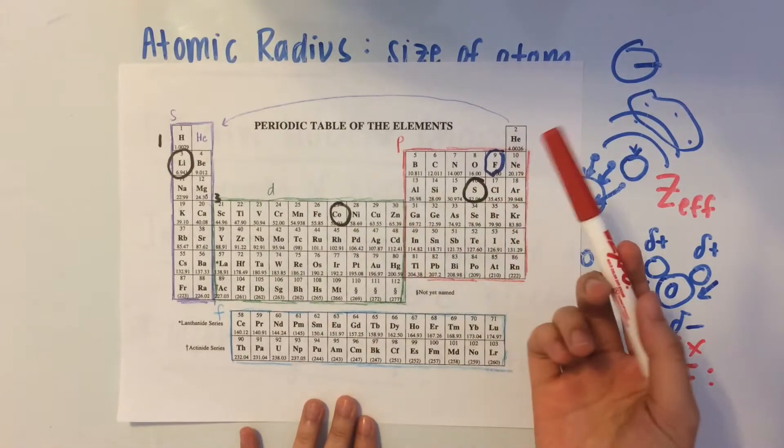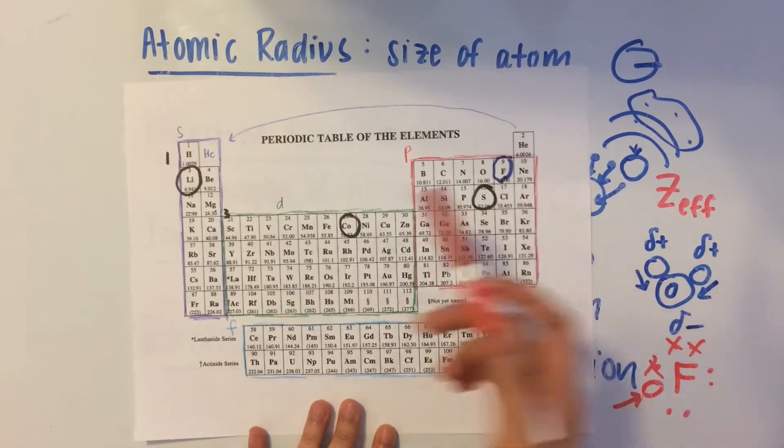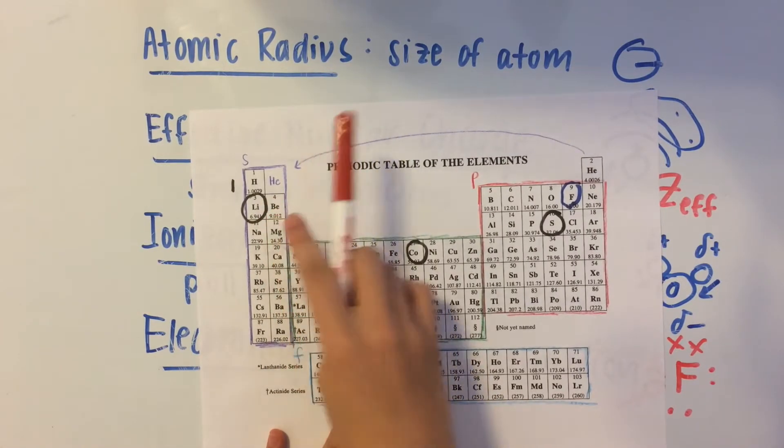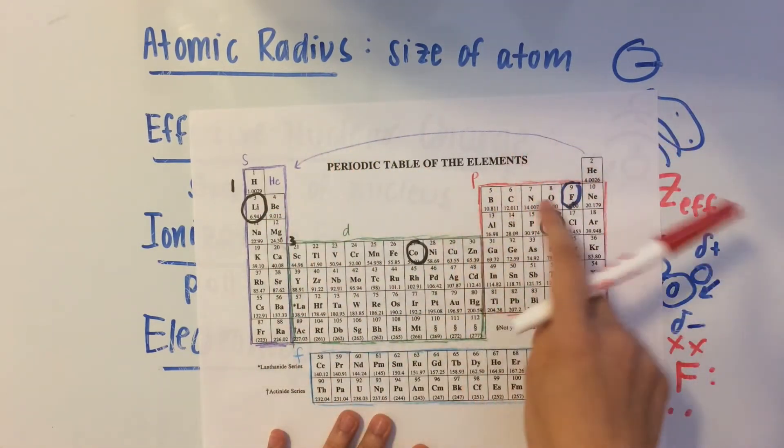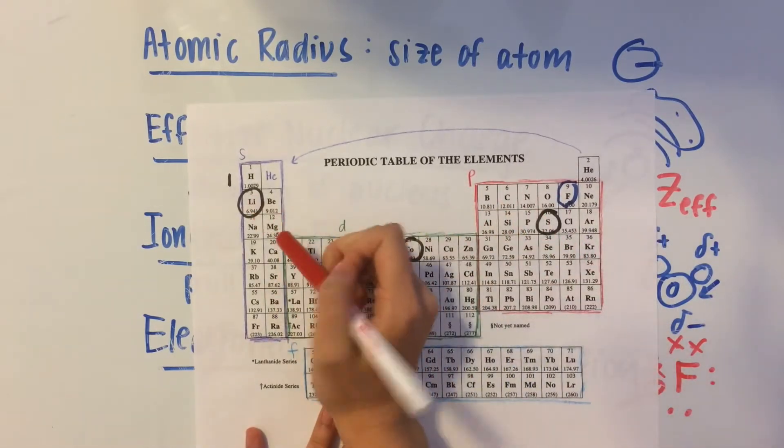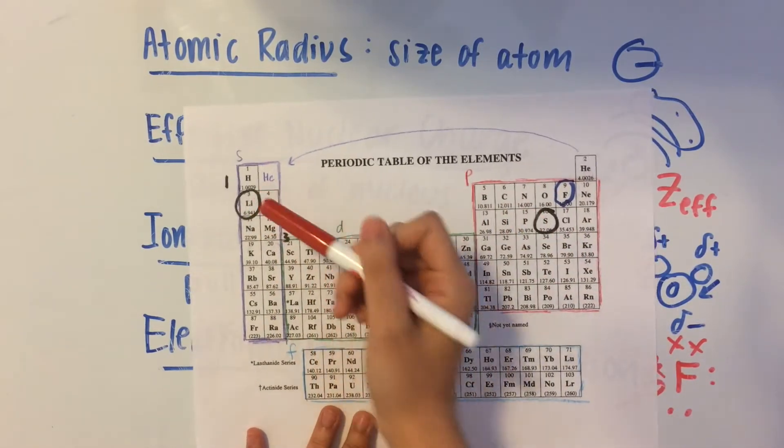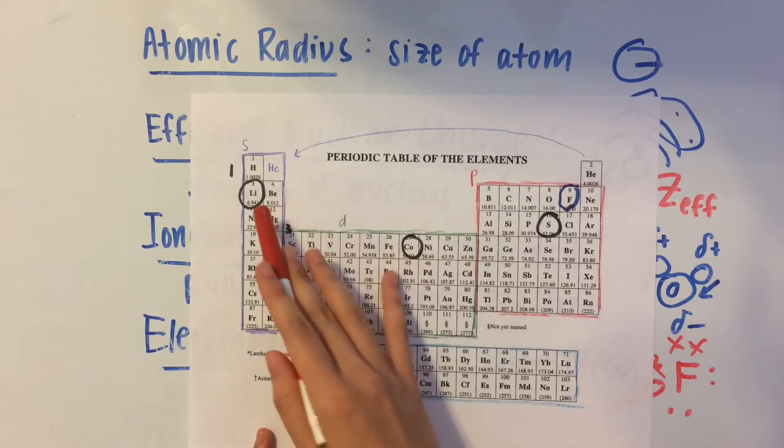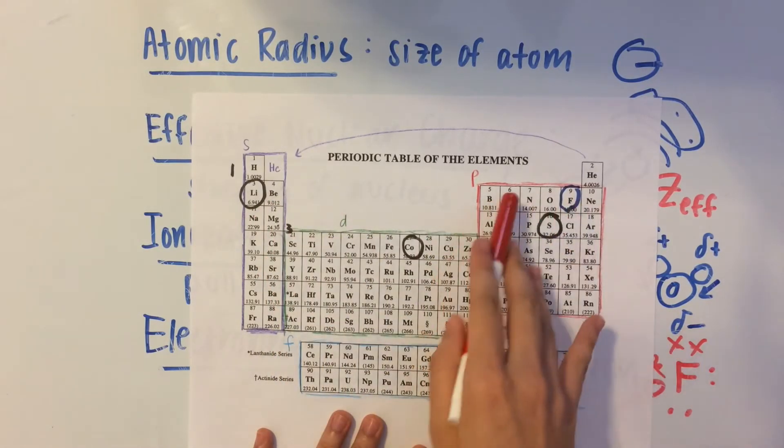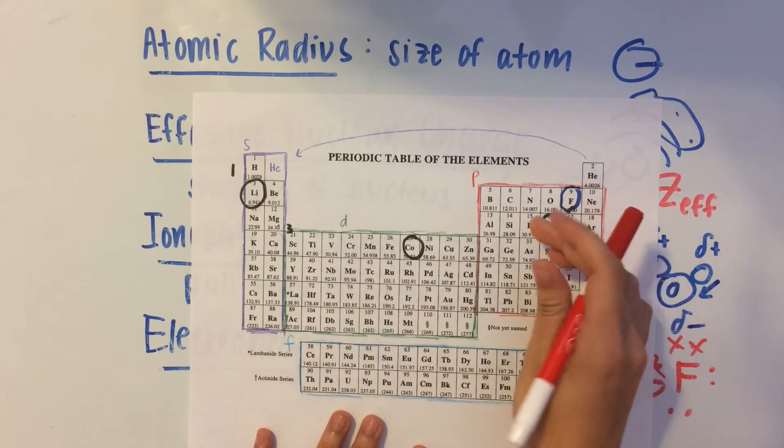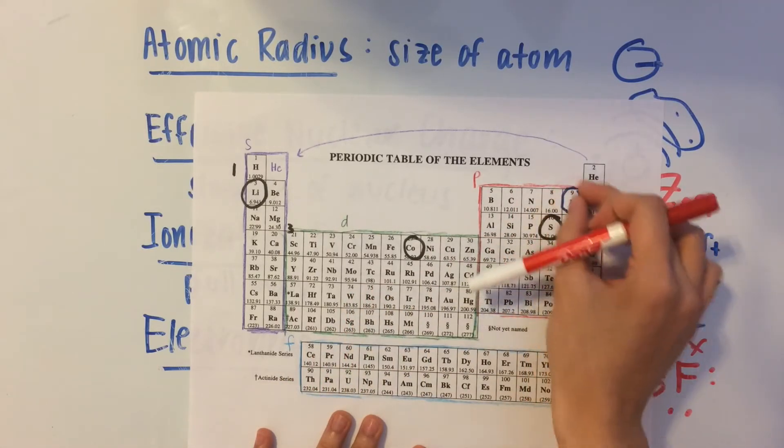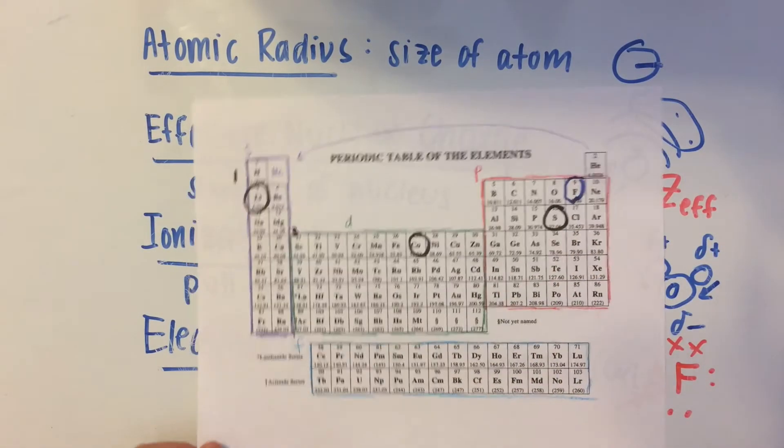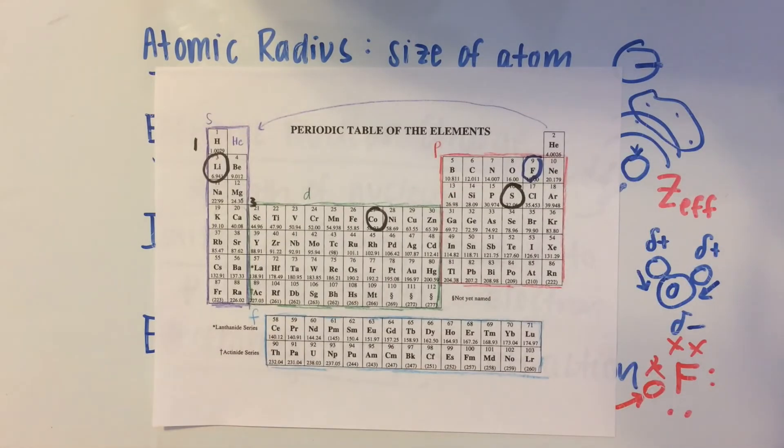So if I'm asked, is the atomic radius of beryllium larger or carbon larger, I would say that beryllium has a greater atomic radius because it's farther away from fluorine, and carbon is closer to fluorine. So anything that's closer to fluorine or in this area is going to be smaller. And you can do that with the other periodic trends too.